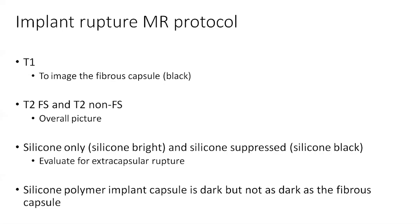What is the typical MRI protocol for implant rupture? We want a nice T1 image so that we can visualize the fibrous capsule, which will be black on T1 images. We also want to do T2 fat sat and/or T2 non-fat sat for an overall picture of the implants in the breast.